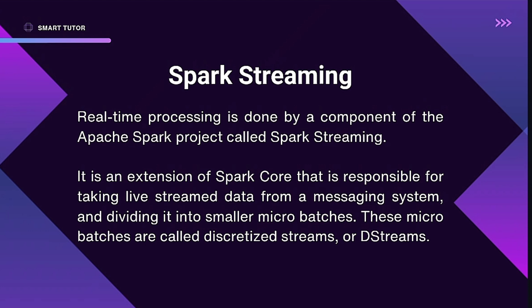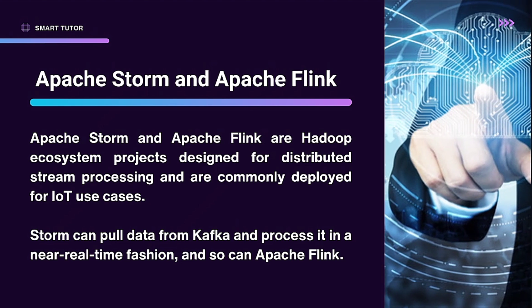What is Spark Streaming? Real-time processing is done by a component of the Apache Spark project called Spark Streaming. This is an extension of Spark that divides a live stream into smaller micro-batches, called Discretized Streams or D-Streams.